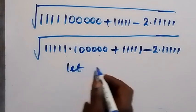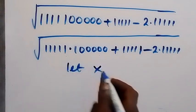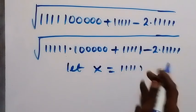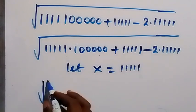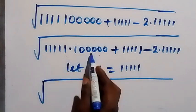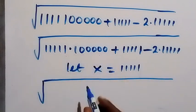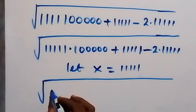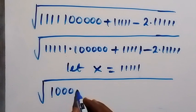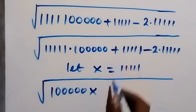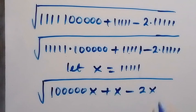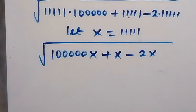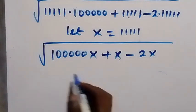Let x equal 1 1 1 1 1 — one in five places. Then this expression can be written as the square root of x times 1 0 0 0 0 0 — which is 100,000 — so we have 100,000x, then plus x, then minus 2x. From here we can simplify: x minus 2x gives us negative x.